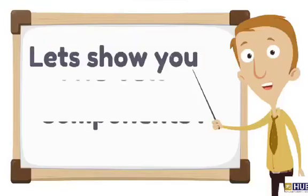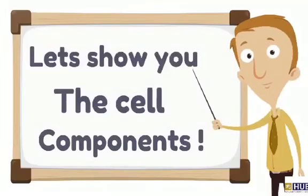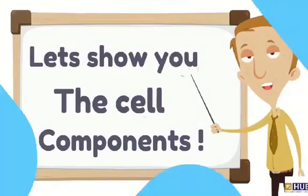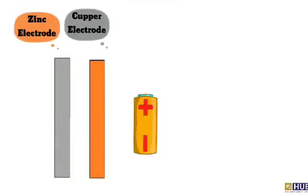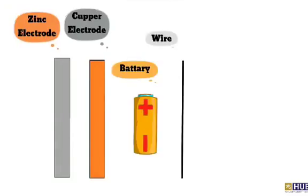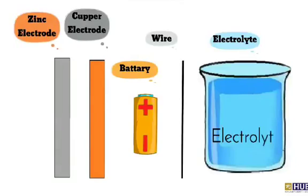Electrolytic cell explains how redox reaction occurs. Let's show you the cell components. We have zinc electrode, copper electrode, power source represented in battery, electric wire, electrolyte solution of molten sodium chloride.